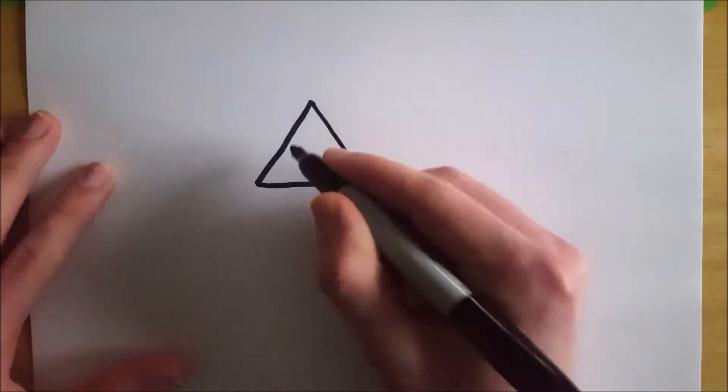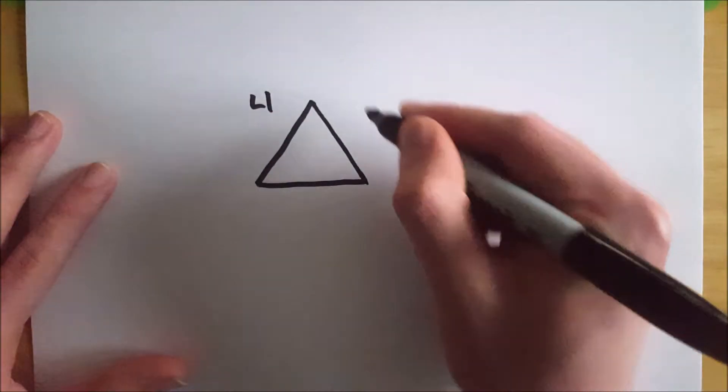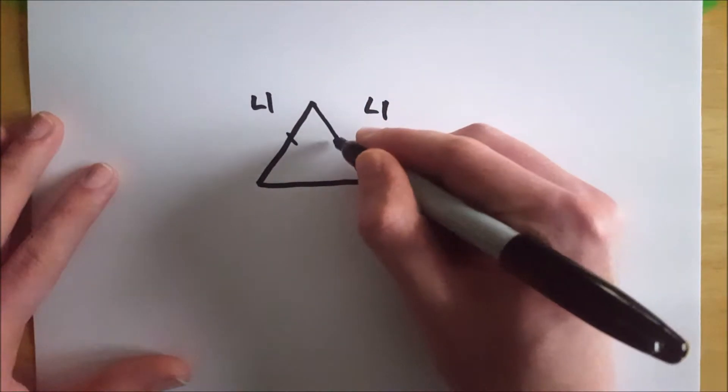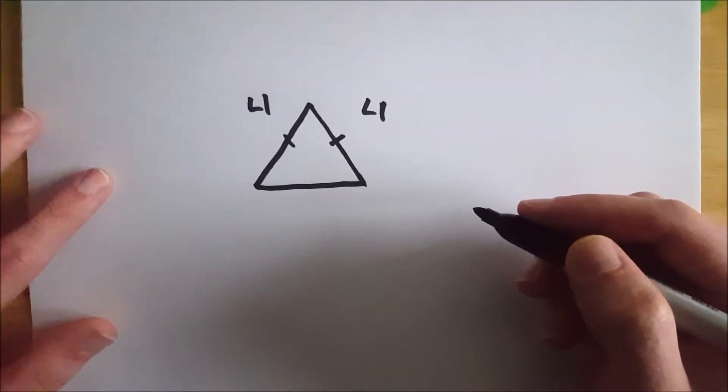All right, so let's say the length of this side is four units and this side is four units. Now we know we got an isosceles triangle. So the isosceles triangle theorem applies.